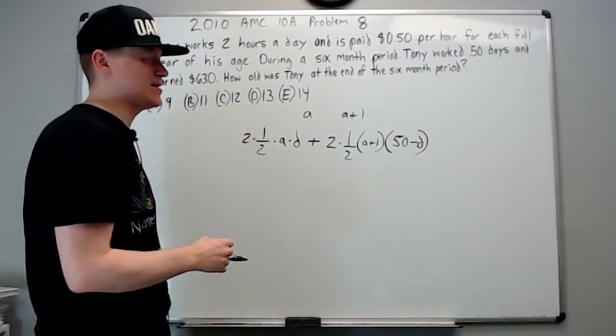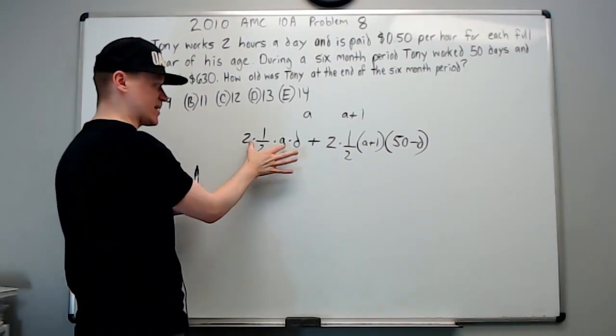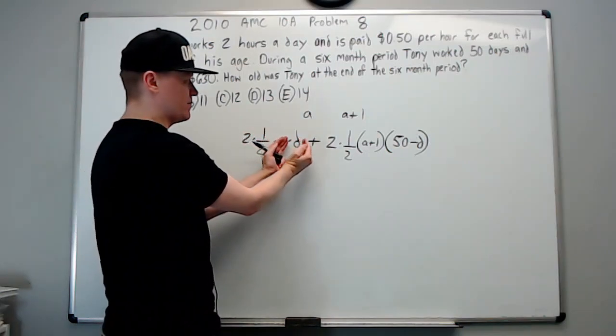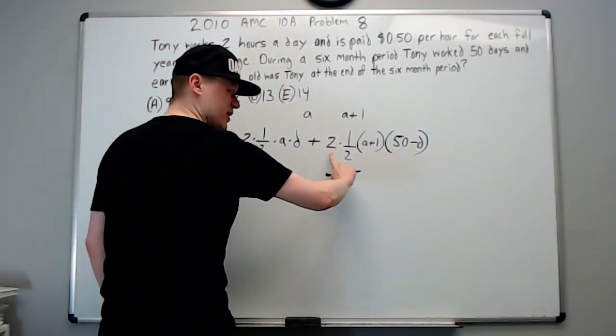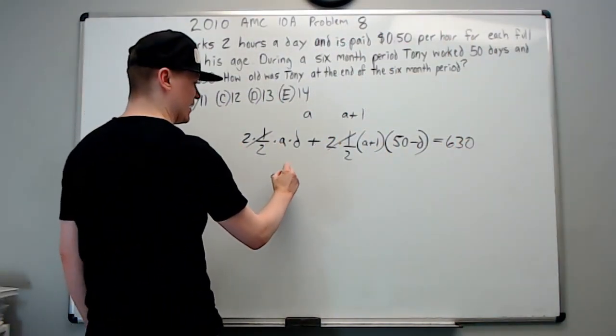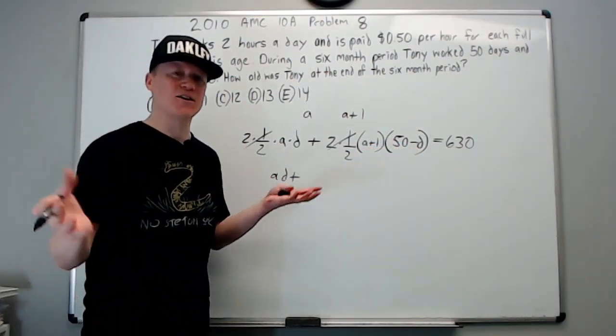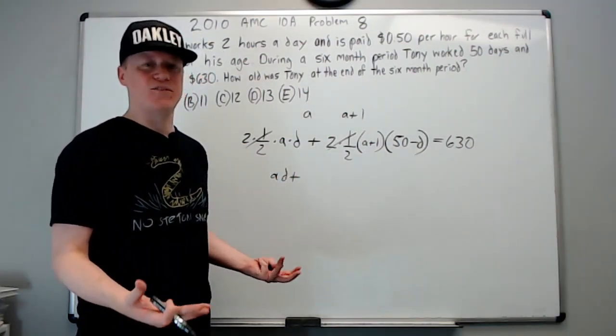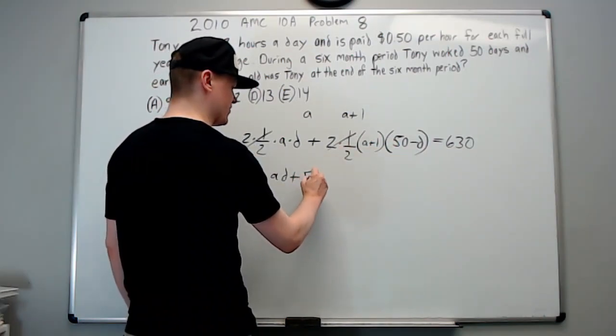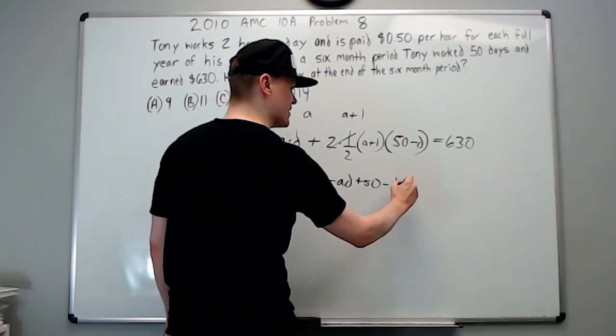It might take you a little longer to come up with this; that's okay. Now we go on: he earned 630. This needs to equal 630. The 2 and the halves cancel. You get ad plus—start distributing—and you might feel a slight moment of panic: I've got two unknowns and one equation. Tell yourself to shut up and just go on. There's going to be some way to figure it out. Let's keep going: a times 50 is 50a, a times negative d cancels with this ad, 1 times 50 is 50, and 1 times negative d is negative d equals 630.